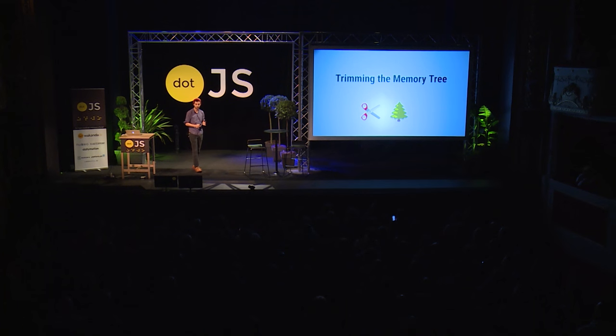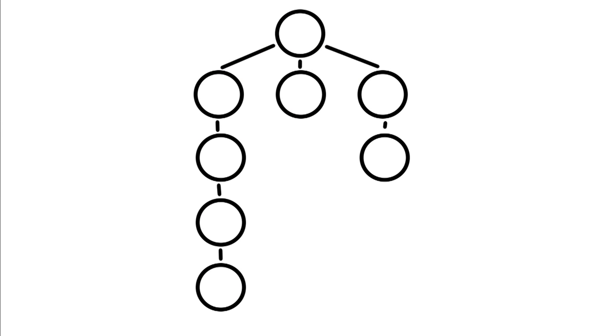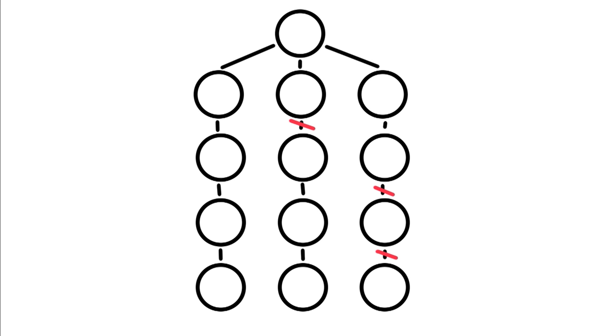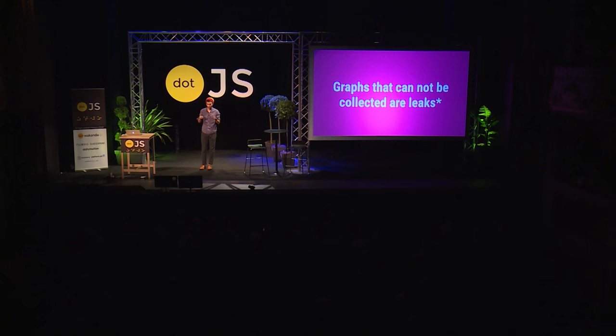Let's take another step back — I want to talk about trimming the memory tree, understanding how the garbage collector works. V8 does it, but you probably should know. Here's your app: it looks like a tree, a bunch of circles, a graph. Imagine you delete some things — along comes the garbage collector and asks, 'Who's not attached to that main object?' and gets rid of them. Graphs that cannot be collected are memory leaks.